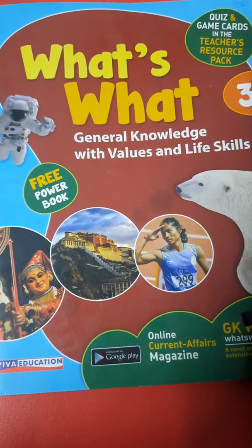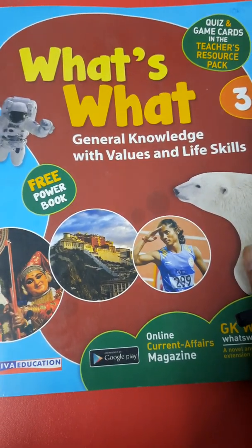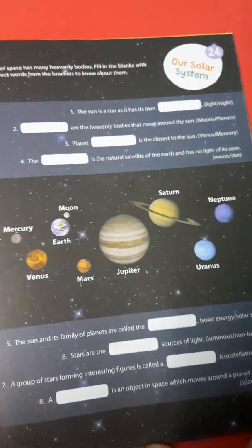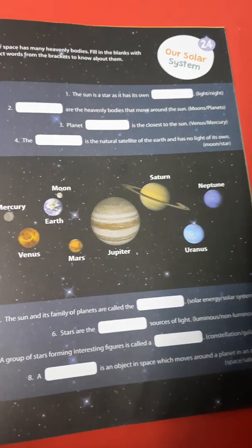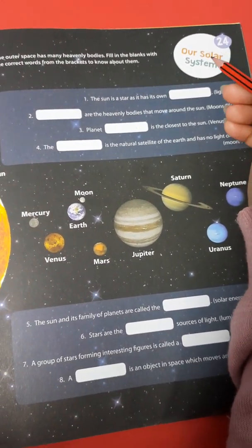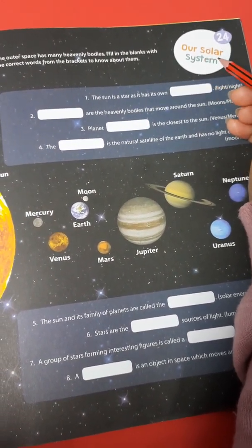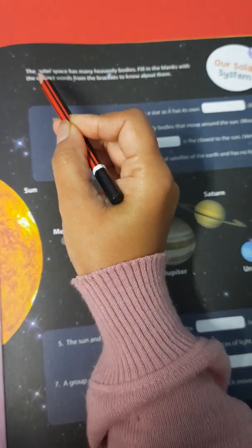Good morning, my dear children. Today, class 3GK, we will be doing the new lesson on page 29, lesson 24 about our solar system. Let's see.